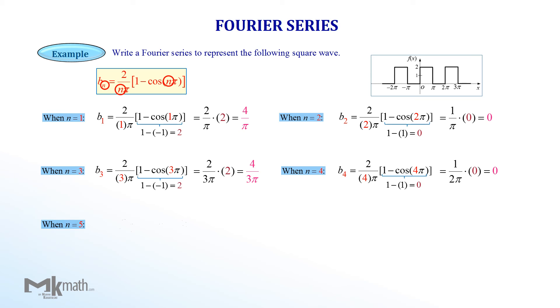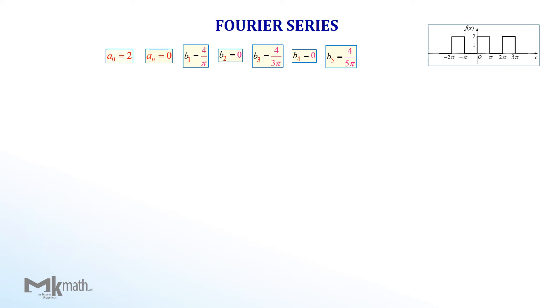When n equal 5, substituting 5 into n and evaluating cosine 5 pi to get 4 over 5 pi. Continuing the same way gives values of b. We found that a0 equal 2, no other a values, b1 equal to 4 over pi, b3 equal to 4 over 3 pi and b5 equal to 4 over 5 pi.